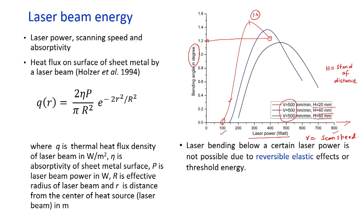Similar trends were observed for h=40 mm and h=60 mm. For h=40 mm, insignificant bend angle occurred below ~150 W; a significant ~1.3 degrees was achieved around 300 W, then it reduced at 400–600 W. For h=60 mm, a similar pattern was seen: bend angle peaked and then decreased with increasing laser power.